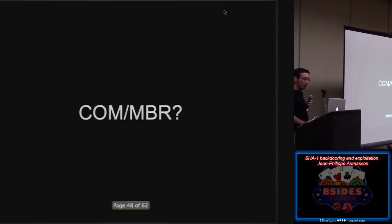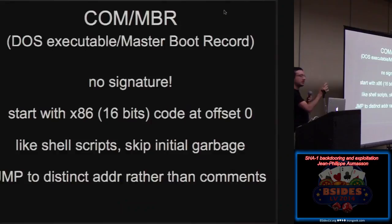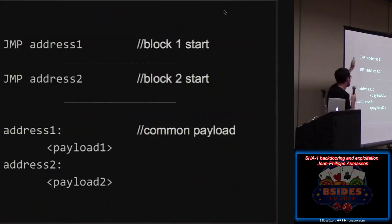COM or MBR, some master boot records and COM files, so maybe not the most used executables today, but what's fun is that there's nothing at offset zero at all. The first byte can be a byte of code. So it really starts with x86 code. So here the idea is to use a jump instruction to jump at different offsets and control this jump based on the differences imposed by the attack.